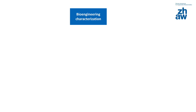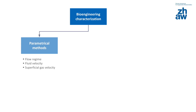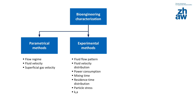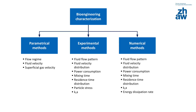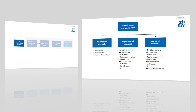Bioengineering characterization can be performed by using parametrical or experimental methods to determine conventional parameters such as flow regime, mixing times and oxygen transfer. Nowadays, modern computer-assisted technologies such as Computational Fluid Dynamics, or CFD, can also be used.